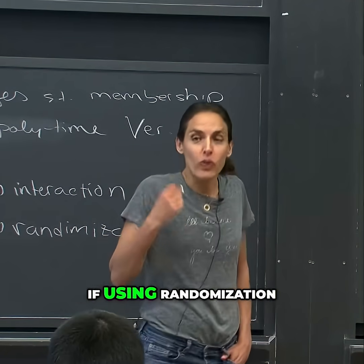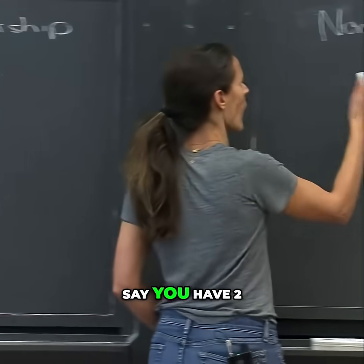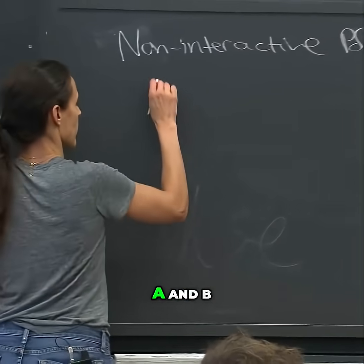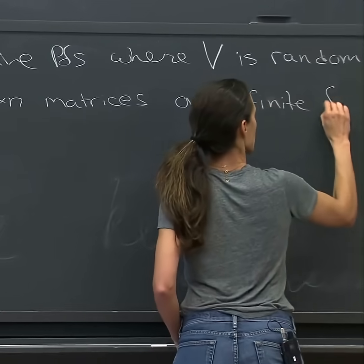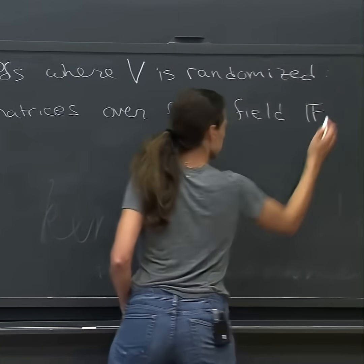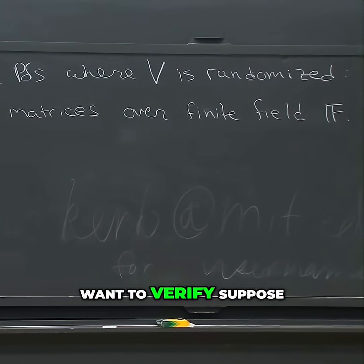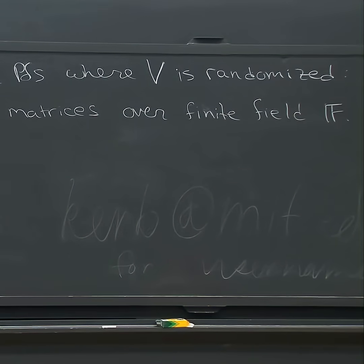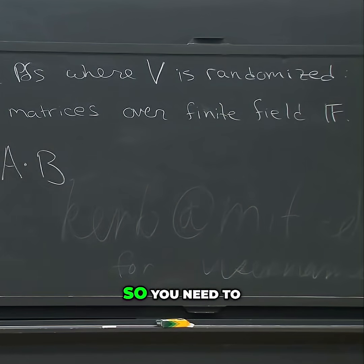It turns out that using randomization, you can do it more efficiently. Let's say you have two n by n matrices, A and B, and you want to verify that some matrix C is equal to A times B. So you're given C, and you need to verify a task of matrix multiplication.